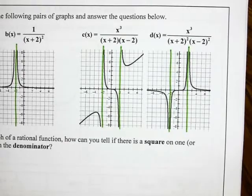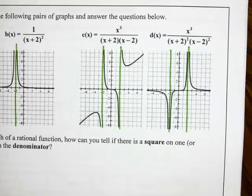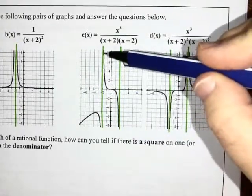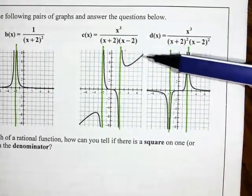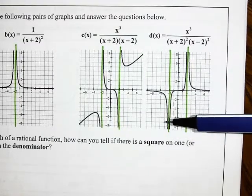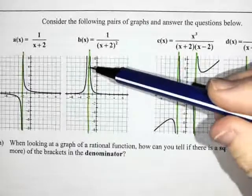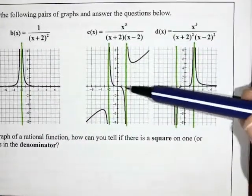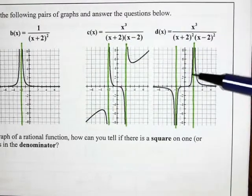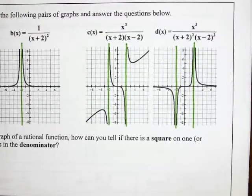But once again I notice if I look at the asymptote at negative 2, one end is pointing down and one end is pointing up on the original function. But here both ends are pointing, this time they're pointing down. Last time they were both pointing up, this time they're both pointing down. If I look at this one, one of them was going down, one of them was going up, and now both ends are going up.